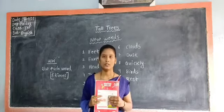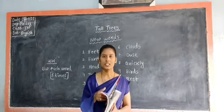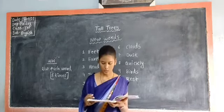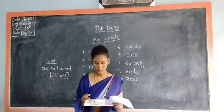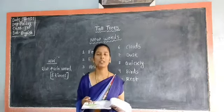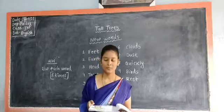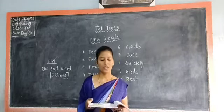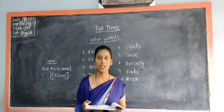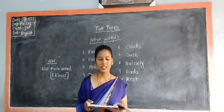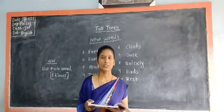All of you open your English textbook and open page number 23. The name of the poem is Tall Trees.